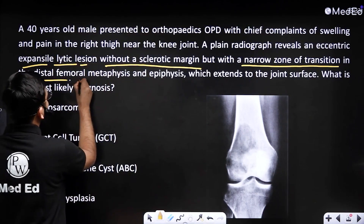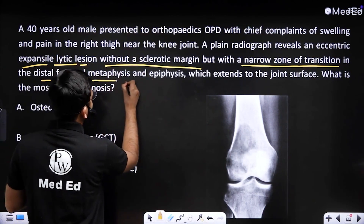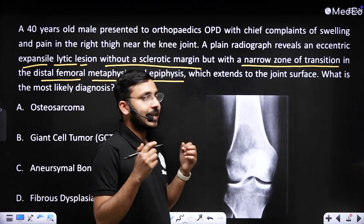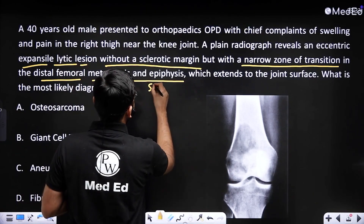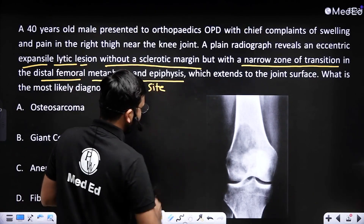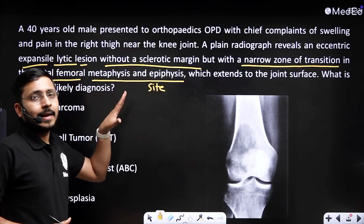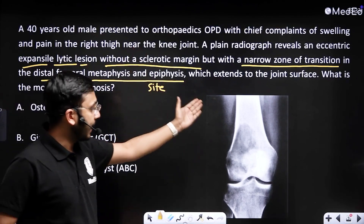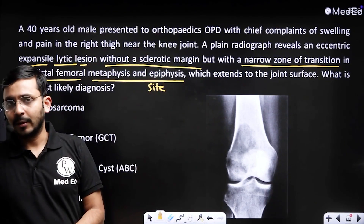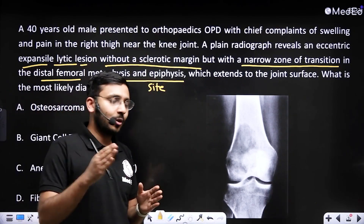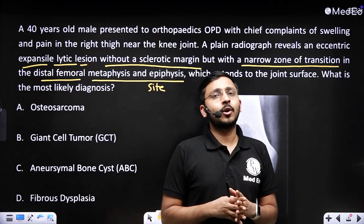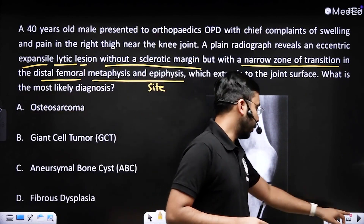The site of the lesion is in the distal femoral meta- and epiphysis — this tells us the site of the bone tumor. Based upon these descriptions and the x-ray, we will arrive at our diagnosis. You should be able to tell the diagnosis once we complete the topic of bone tumors.